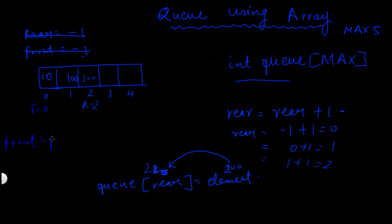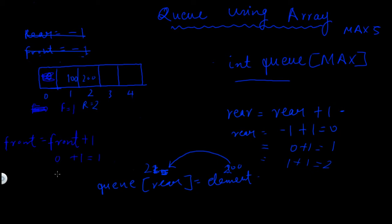When an element is deleted from the queue, the value of front is incremented by 1: front equals front plus 1. The value of front at this point is 0, so 0 plus 1 equals 1. Front becomes equal to 1, so the element at position 0 gets deleted. Deleting another element: front is 1, so 1 plus 1 equals 2. Front becomes equal to 2 and this element gets deleted.